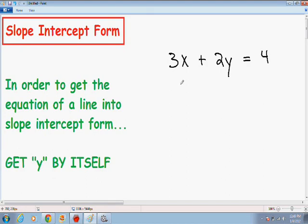So here we have the equation of a line, 3x plus 2y equals 4, and what we want to do is get this line and express this line in slope-intercept form.